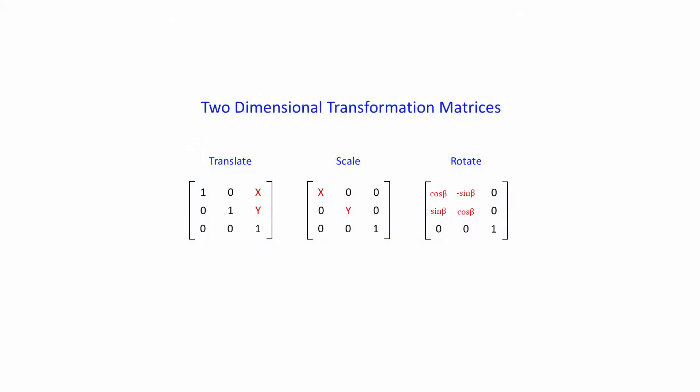In the previous video, you also met three different types of transformation matrix that can be applied to the vectors in a 2D model: Translate, Scale, and Rotate.